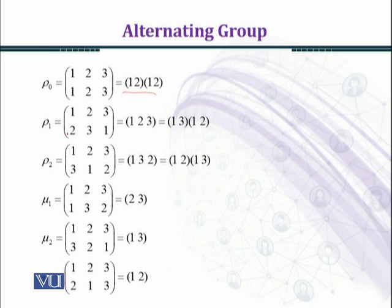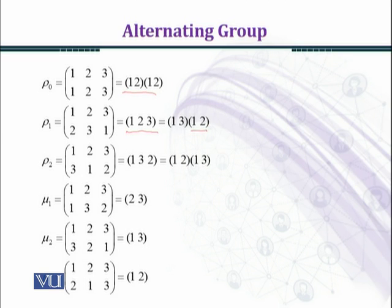Now we shall write rho1, which is a rotation where 1 goes to 2, 2 goes to 3, and 3 goes to 1. In this way we get the cycle (1 2 3). Writing it as a product of transpositions from right to left, we write the transposition (1 2) then (1 3), and the product of these two transpositions equals the cycle (1 2 3).